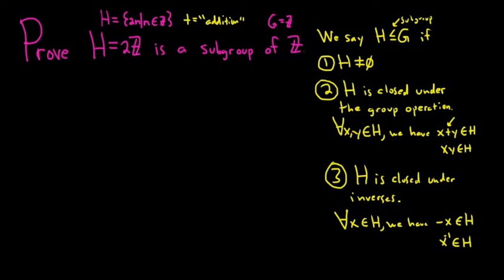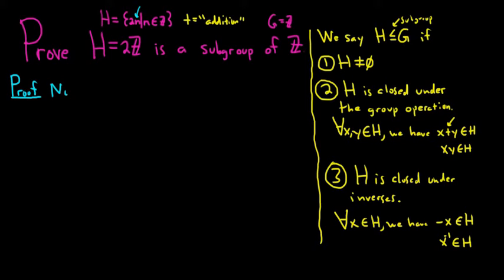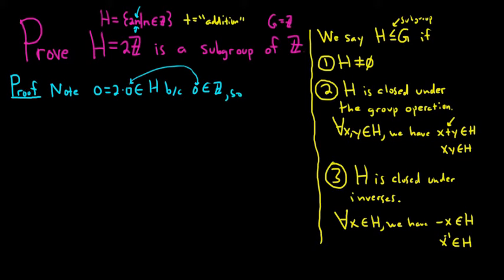Whenever we have a question that requires us to show something is a subgroup of a group, all we have to do is meet these three conditions. Let's prove this one — it's purposely relatively straightforward. First, we have to explain why h is nonempty. We can pick any integer and show it's in h. Note that 0 equals 2 times 0, which is in h, because 0 is in Z. This shows that h is not empty, so the first condition is satisfied.